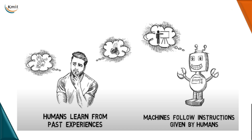AI basically refers to creating intelligent systems that will mimic human beings. When you think about how humans learn, the answer is that humans learn from experiences. Now, how do machines learn? So far, machines learn by following instructions given to them — we do programming, give instructions in the form of a program, and the machine follows them.